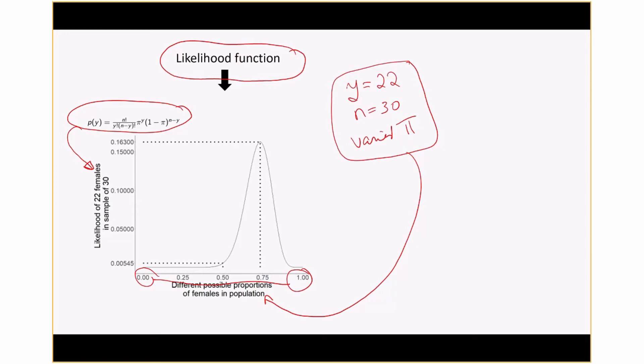Our goal is, what is the best estimate of pi? If you look at this plot, there's our likelihood function. There's the maximum possible likelihood that we got. If we take this line down, we can see the pi value that gives us the maximum likelihood equals 0.733, which is exactly what we got when we used our common sense approach of 22 over 30.